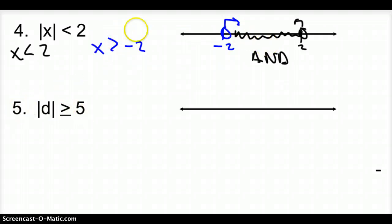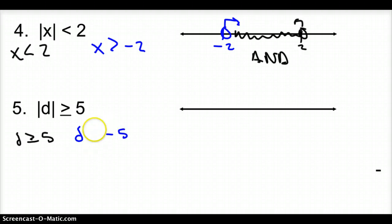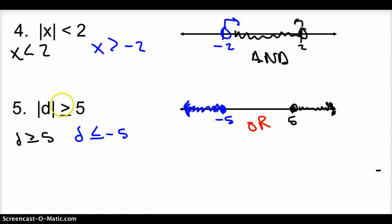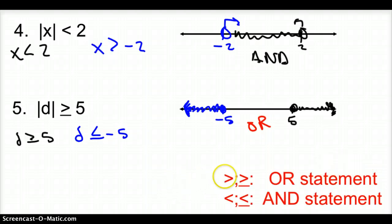Number 5 has a greater than or equal to sign. We take d out of the absolute value: d is greater than or equal to 5. And when we make it negative, we flip the inequality: d is less than or equal to negative 5. Graphing: closed circle at negative 5 shading left, closed circle at 5 shading right — the variable is on the left, so we follow the arrow. This is an OR statement. Key rule: a greater than or greater than or equal to sign with an absolute value gives an OR statement; a less than or less than or equal to sign gives an AND statement.